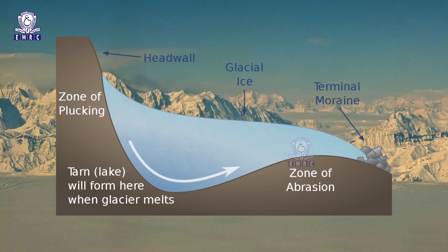The erosional work of the glacier is mostly accomplished through the process of abrasion and plucking. Abrasion and plucking are responsible for the formation of numerous topographical features.